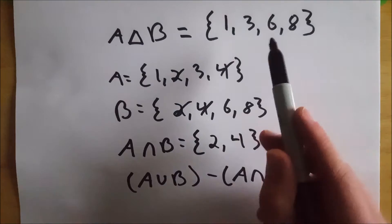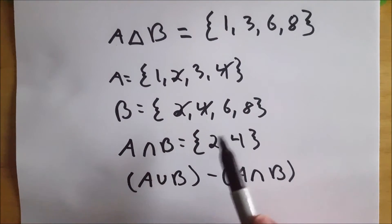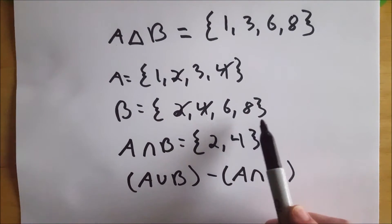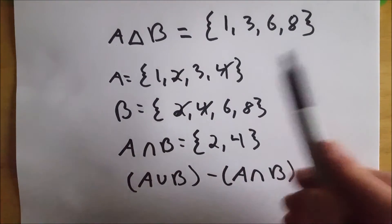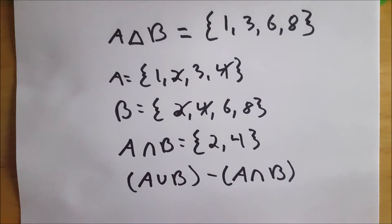A has 1 and it has 3, and B does not have either of those. B has 6 and B has 8, and A does not have 6 and 8. They both have 2 and 4, so we don't include that in the set because that's how symmetric difference works.